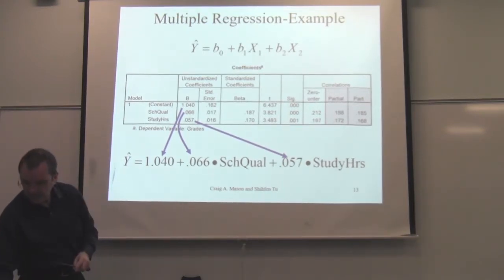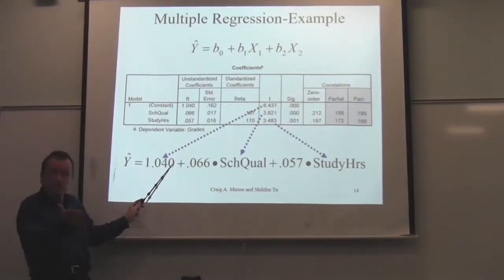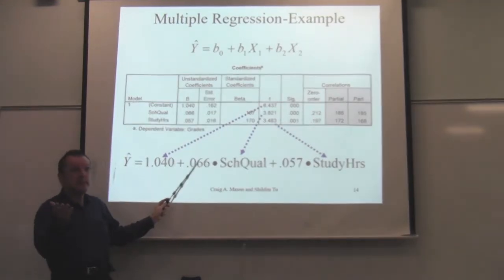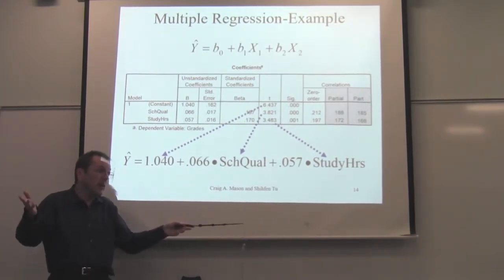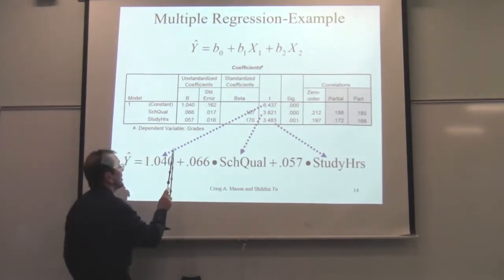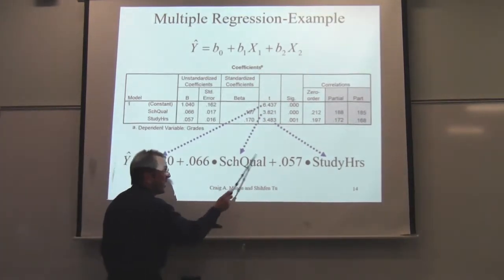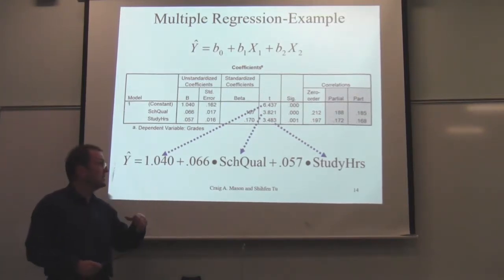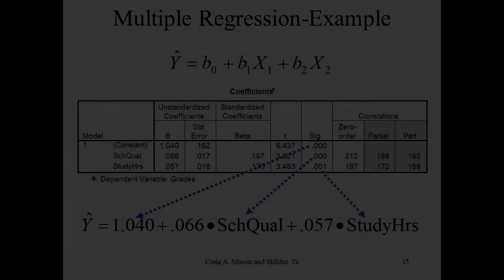Here's the t-test for each of those effects. It's a t-test for: is this coefficient equal to zero? Which is the test for: is there an effect? Because if a regression coefficient is not significantly different from zero, that tells you that variable has no effect — you might as well call it zero, which is another way of saying no effect. These t-tests are testing each regression coefficient value, and in essence testing the effect of each variable — is school quality significant? Is study hours significant?